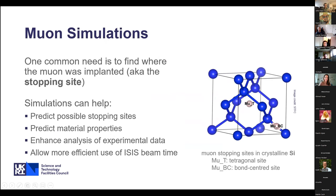We work specifically on muon simulations. The stopping site — the place where the muon stops — is a really common thing people want to find for their particular material of interest. Simulations can help make predictions about where the stopping sites might be in a structure, and if you've already got experimental data, simulations can enhance your analysis. This allows more efficient use of ISIS beam time. On the right is an example of crystalline silicon, which has two muon stopping sites: one in the middle of the tetrahedral structure, and one right in the middle of a bond between two silicon atoms.